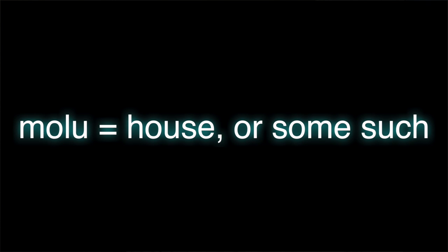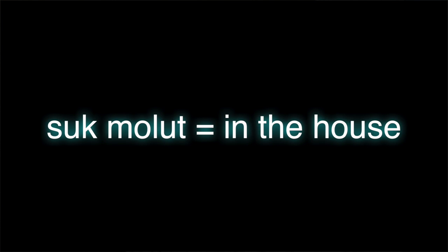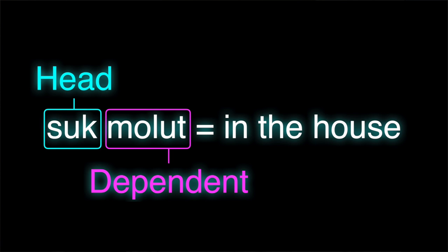Dependent marking is where this preposition assigns some sort of case to the noun that it modifies. You see this in tons of languages. Even in English, where we don't have cases, if you say something is 'in a person,' you'd say 'in me,' not 'in I.' So obviously the 'in' there is assigning some sort of case, and you know it has been modified because you changed the dependent. Doing the opposite — marking the head instead of the dependent — would be having some sort of marking on the preposition itself.